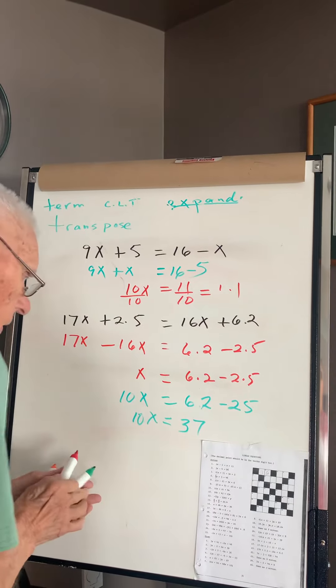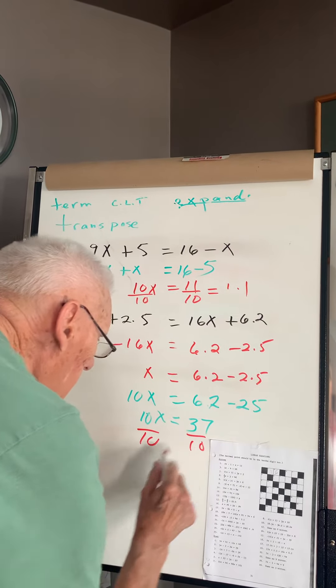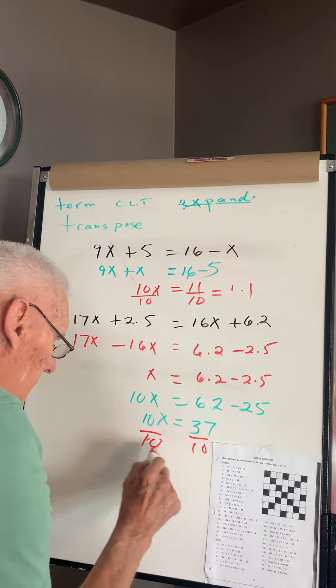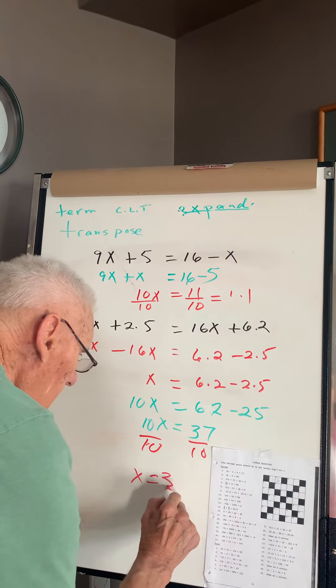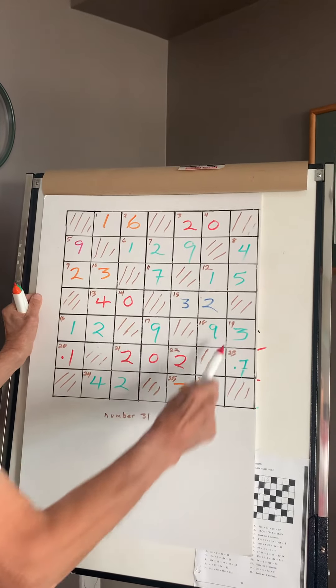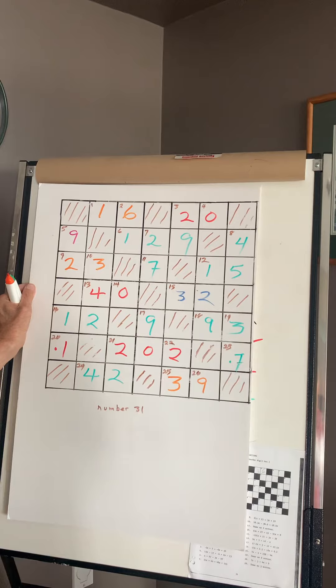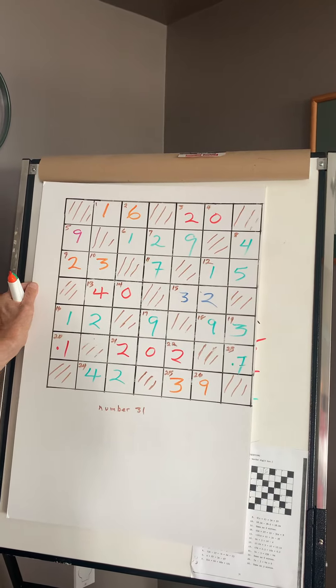Divide by 10, divide by 10, x will be 3.7 over here. 19 down, 3.7. Check. Thank you.